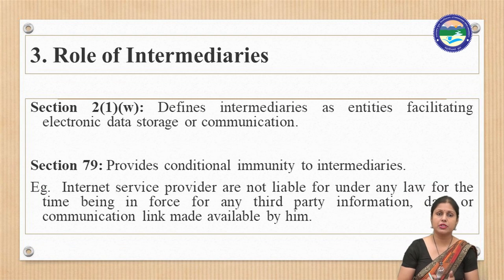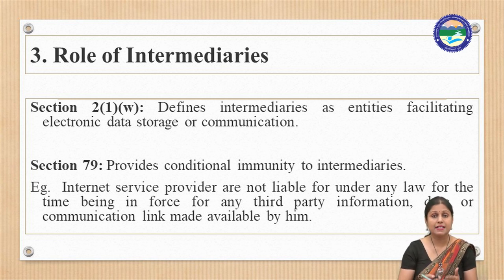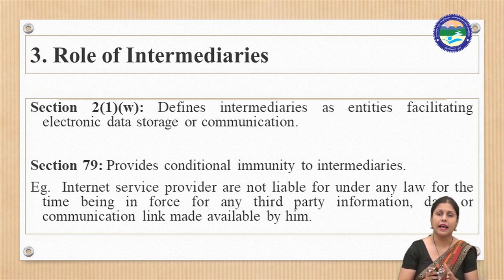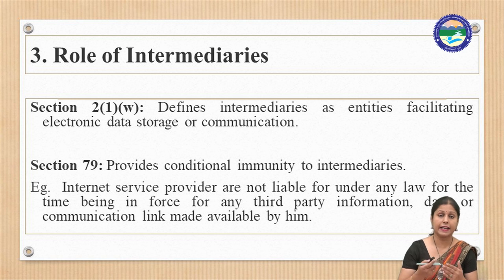Next is the role of intermediaries. Section 2(1)(w) defines intermediaries as entities facilitating electronic data storage or communication. Intermediaries include internet service providers, telecom service providers, search engines, and payment sites. Section 79 provides conditional immunity to intermediaries — for example, internet service providers are not liable under any law for any third-party information, data, or communication link made available by them.